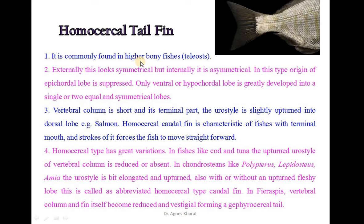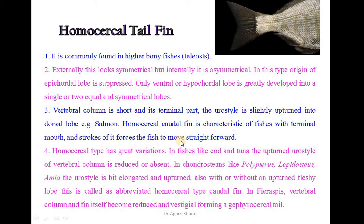Homocercal tail fin is commonly found in higher bony fish, i.e., teleosts. Externally this looks symmetrical but internally it is asymmetrical. In this type, the origin of the epichordal lobe is suppressed. Only the ventral hypochordal lobe is greatly developed into single or two equal and symmetrical lobes. That means the epichordal lobe and hypochordal lobe are not the same in this homocercal tail fin. The ventral column is short and its terminal part, the urostyle, is slightly upturned into the dorsal lobe. Example: salmon. Homocercal tail fin is characteristic of fish with a terminal mouth and the stroke of it forces the fish to move straight forward.